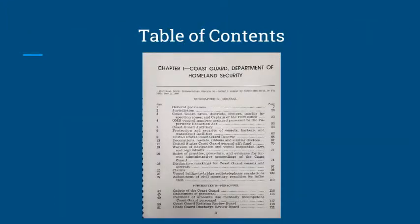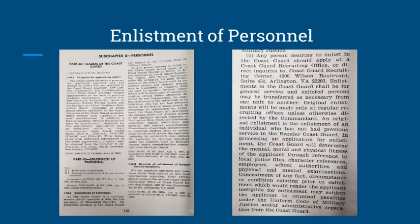Maybe you find this interesting and you would like to join the Coast Guard to inspect vessels, but you don't know how to get started. Luckily, this CFR can help out. In the Table of Contents, there is an Enlistment of Personnel section, which is Part 45, on Page 116. On Page 116, if you read a little, you can find directions on how to join the Coast Guard, which can be found under 45.1-A.